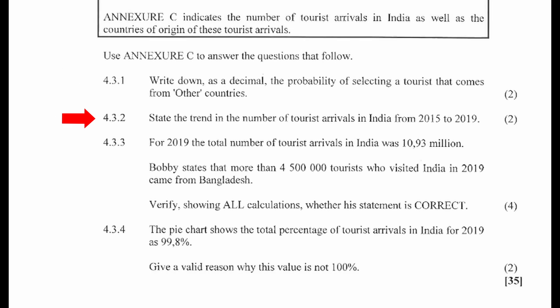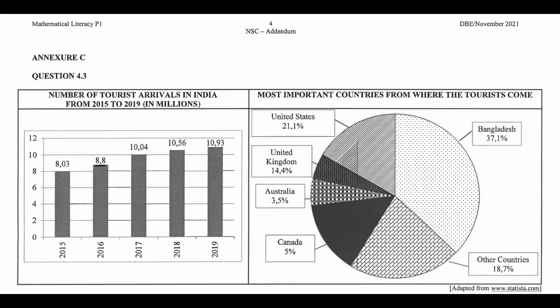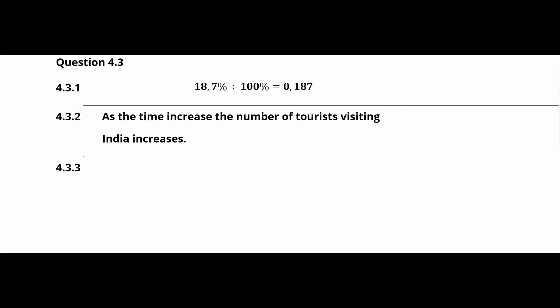4.3.2: State the trend in the number of tourist arrivals in India from 2015 to 2019. From the bar graph in Annexure C, we see that there is an upward trend in the number of tourists visiting India. As the time increases, the number of tourists visiting India increases.